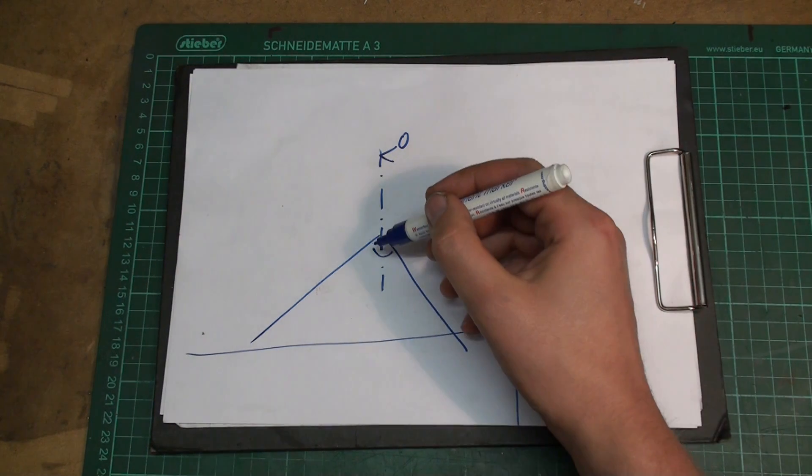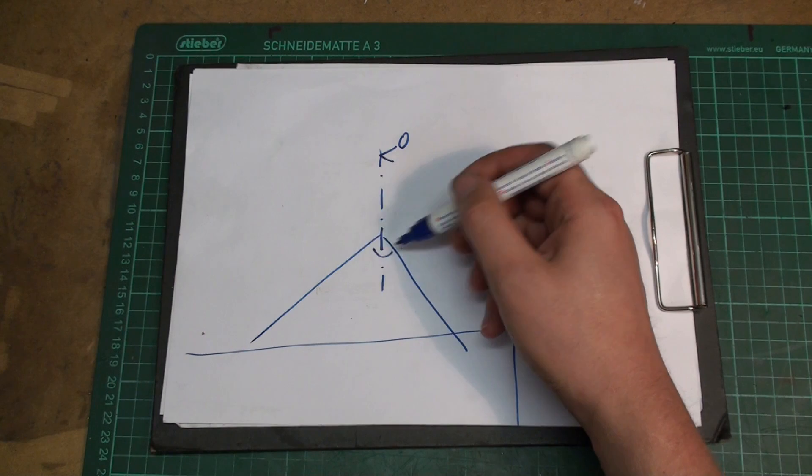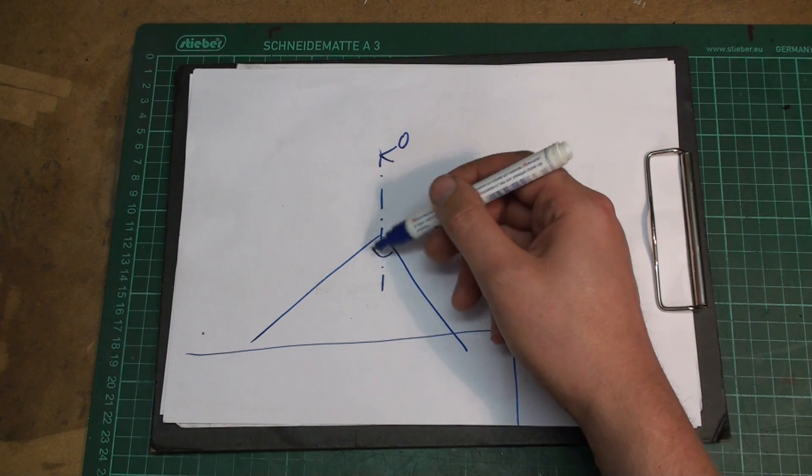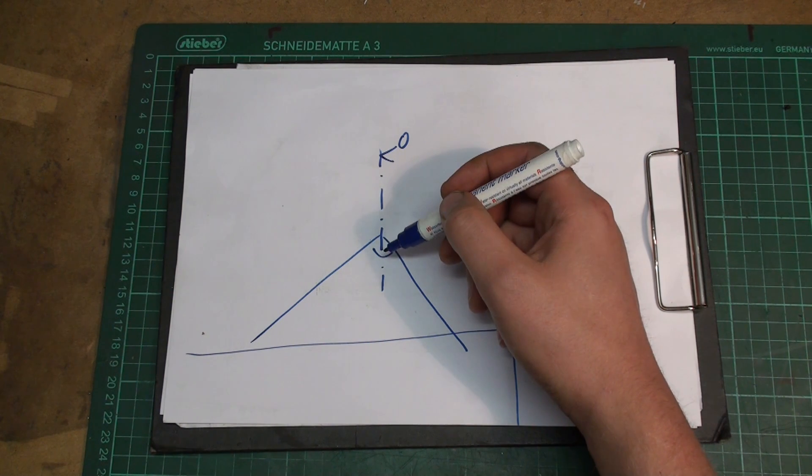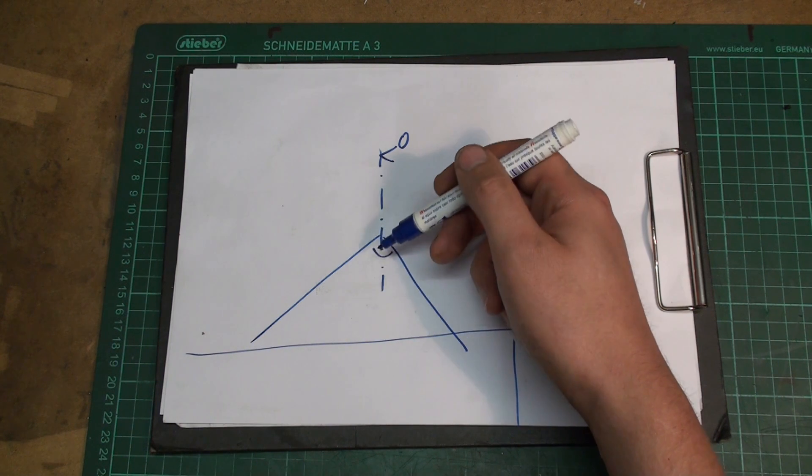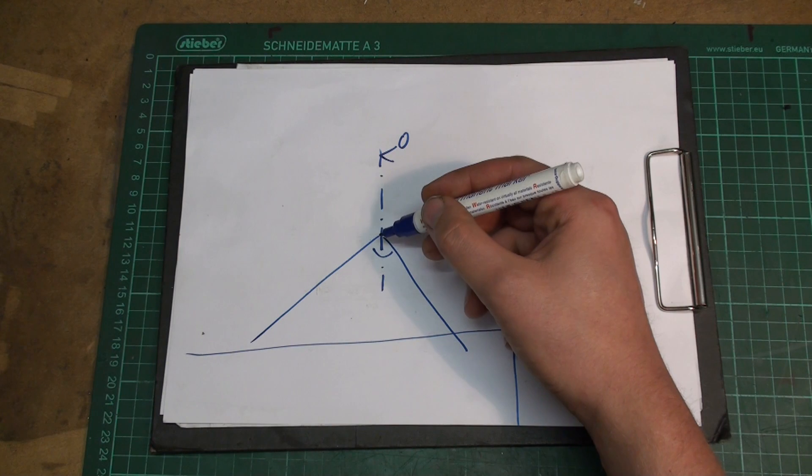You can't touch it with a normal edge finder, because of course there is no flat surface to approach. You can't use a wiggler, not really, and a dial indicator is also not very useful in this case.